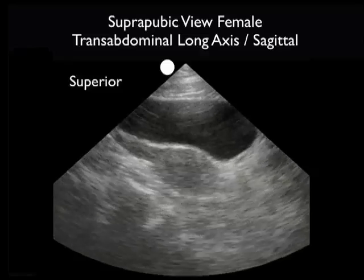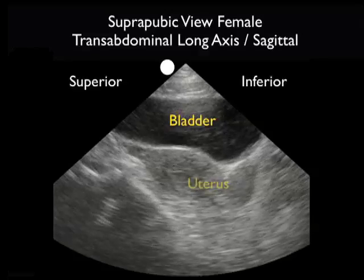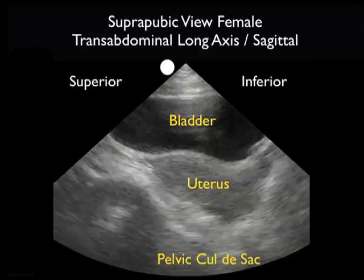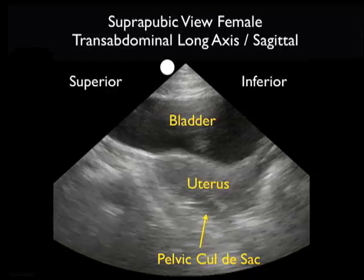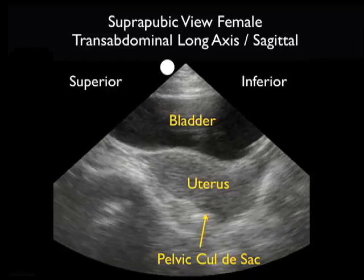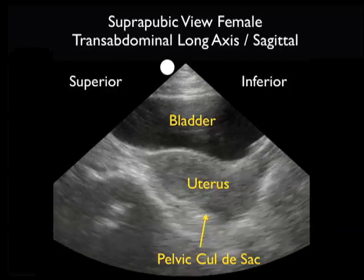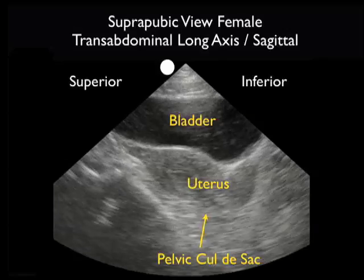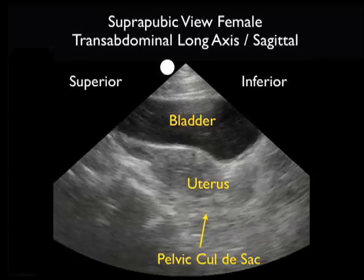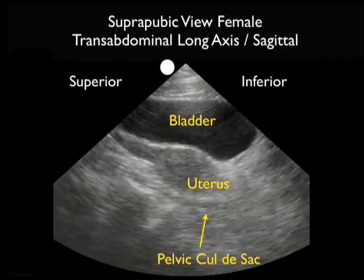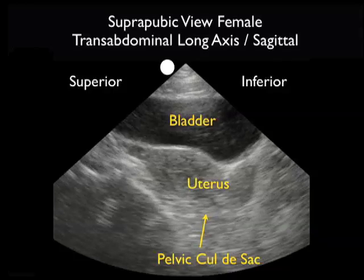Let's begin by looking at some normal video from the suprapubic view, in this case a long axis view in a female, superior to the left and inferior to the right. The first structure we identify is the bladder — the dark area anteriorly — and posterior to the bladder we see the uterus. Now if we look into the potential space, the pelvic cul-de-sac, posterior to the uterus for any dark fluid collections, we see an absence of any fluid on this normal video clip.